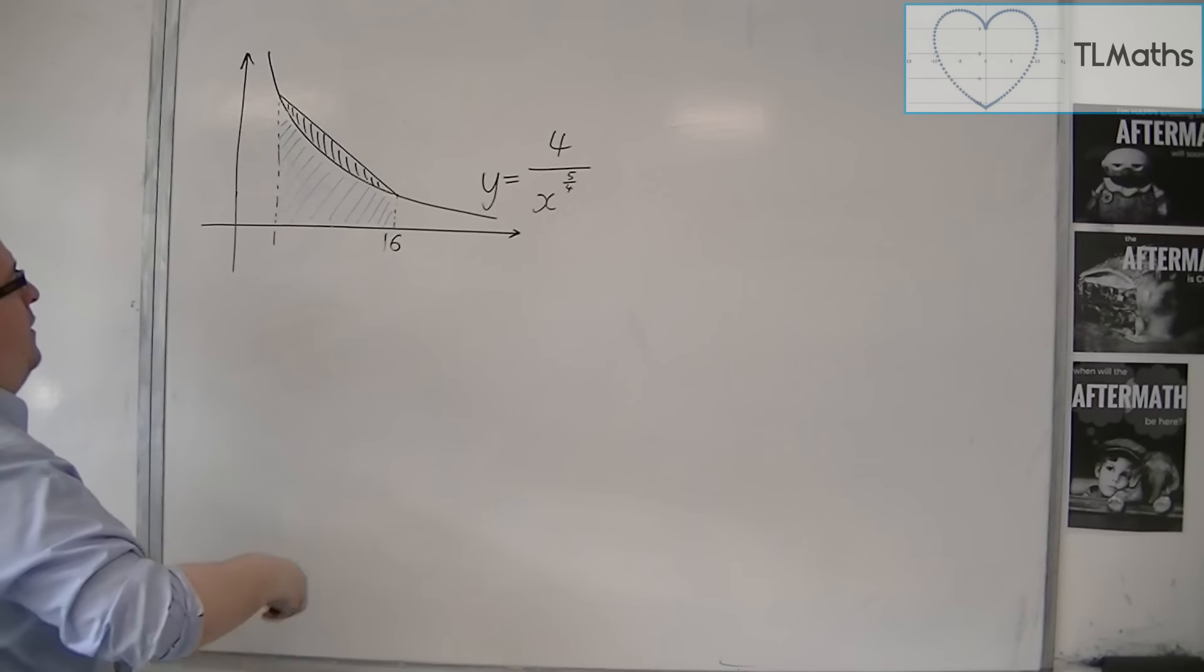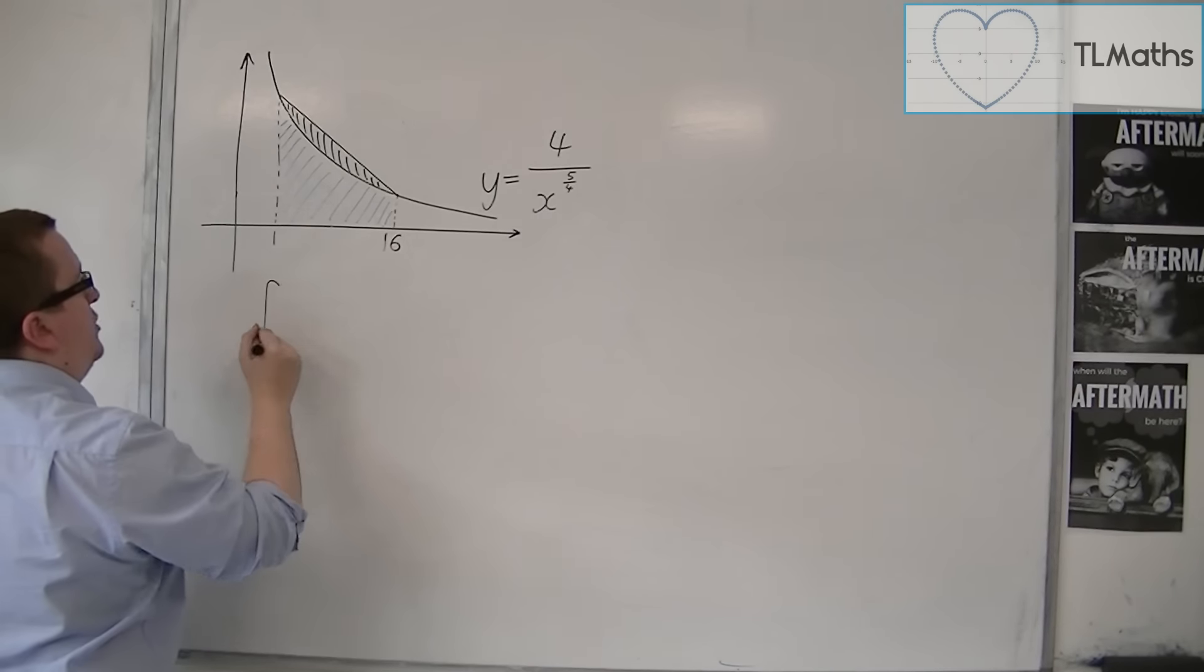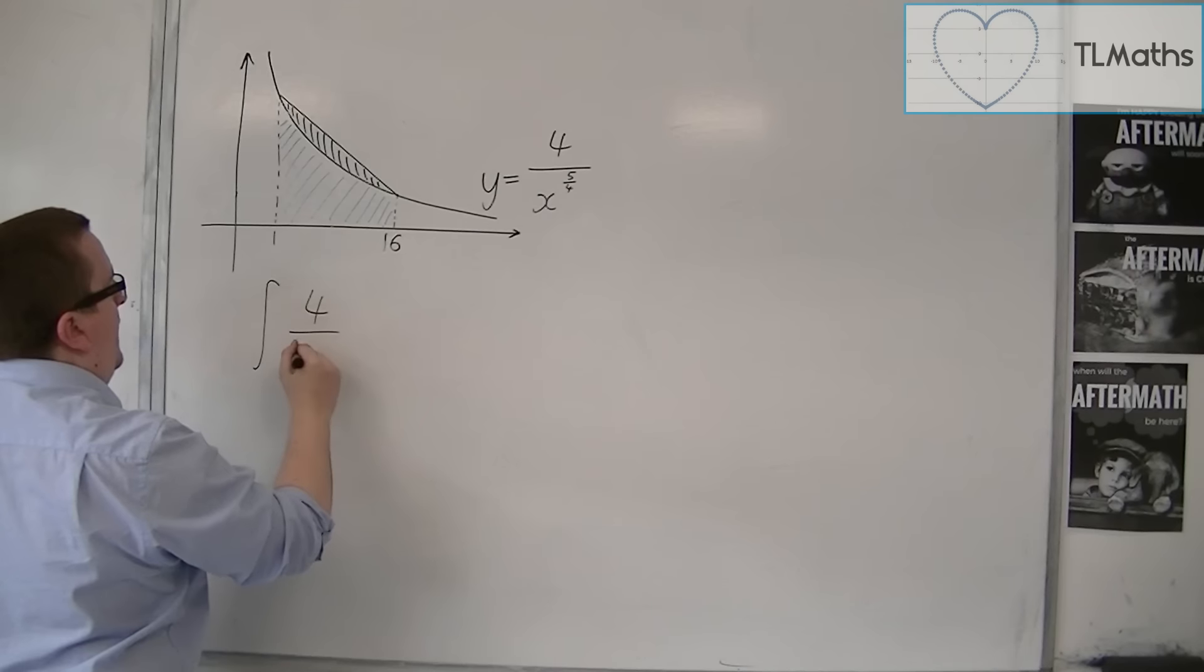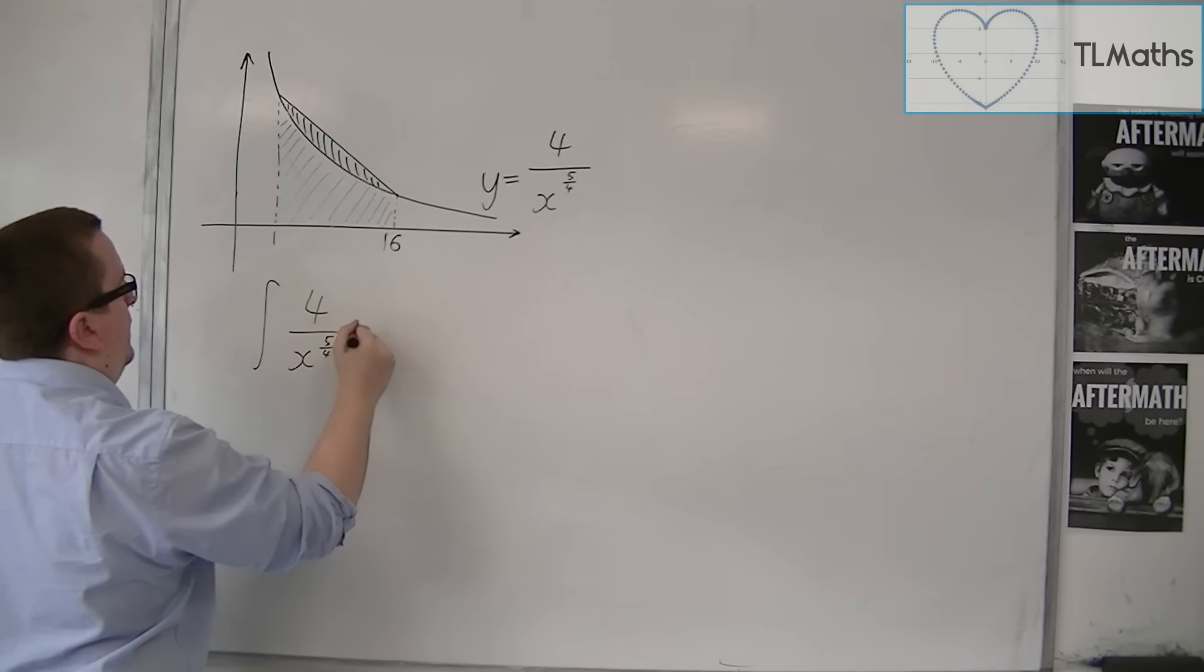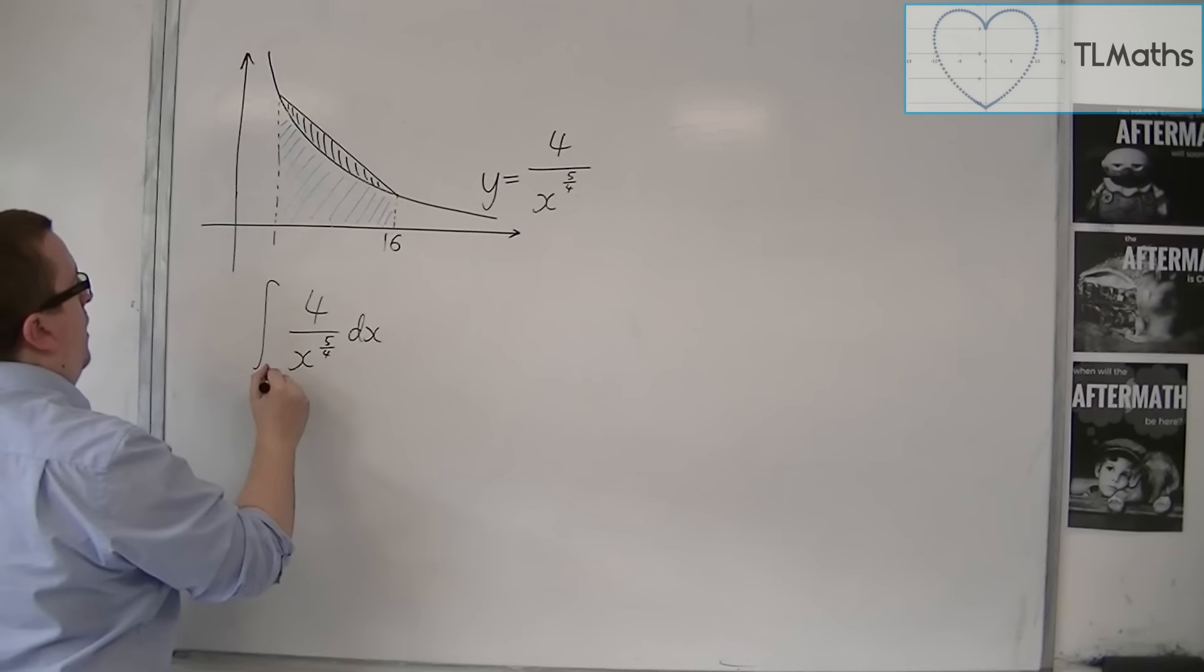So if I look for this blue area first, I would be integrating 4 over x to the 5 quarters, dx, between 1 and 16.